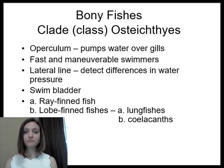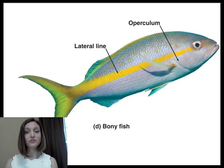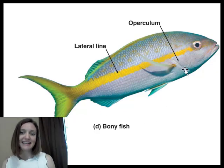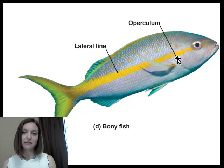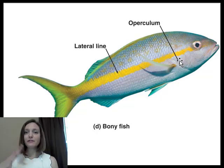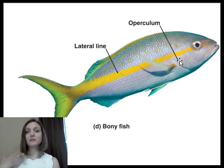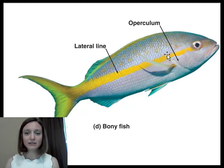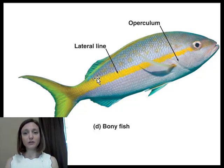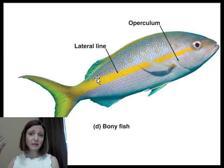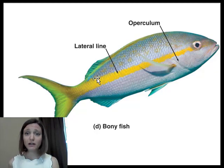We're going to talk about two major groups of the osteichthyes: the ray-finned fish and the lobe-finned fish. Here's a generic osteichthyes. We can see that their gills are contained underneath this flap of skin. This muscular organ is called an operculum — they open and close it to move water across their gills, which allows them to exchange gases. They still have a lateral line as well, which is the organ they use to detect changes in water pressure — basically hearing with their entire body.